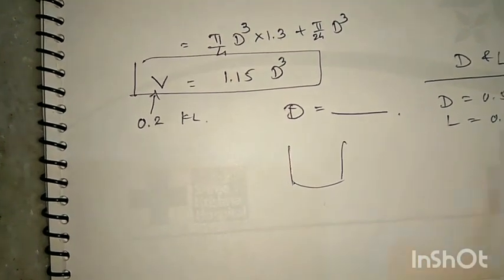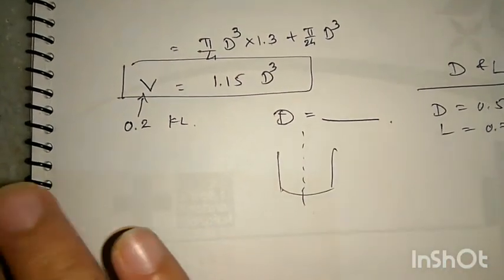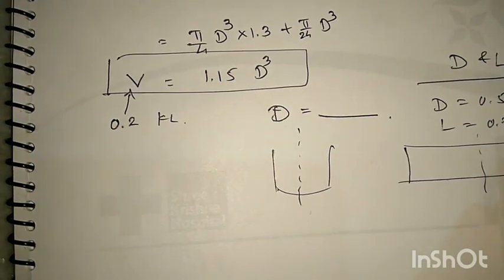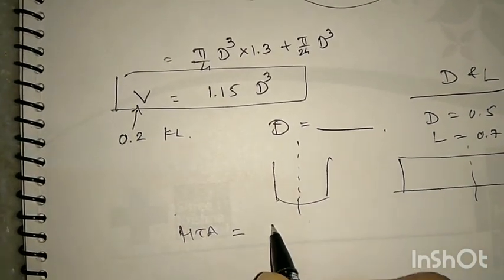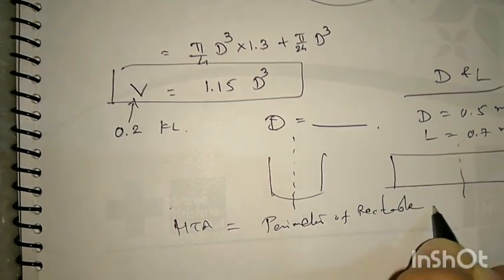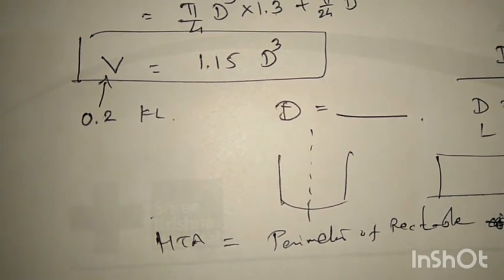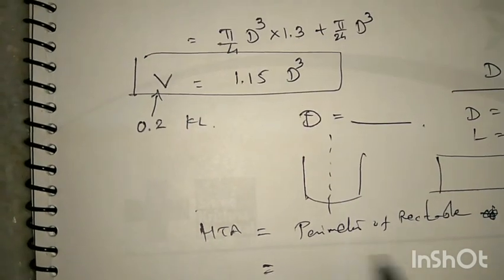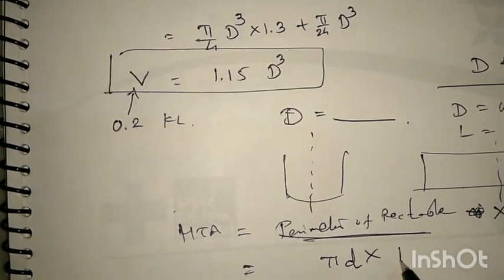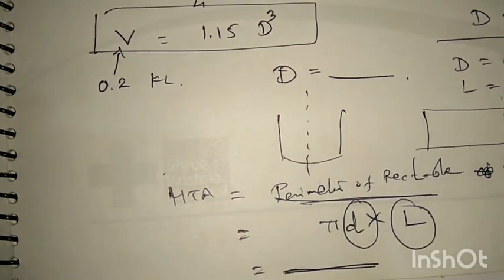To calculate the heat transfer area, I divide the cylinder into two parts. If you cut the cylinder from the middle and lay it down on a surface, it becomes a rectangle. The heat transfer area of the cylinder equals the perimeter of this rectangle times the length: π × D × L. We have D and L, so we can easily calculate this.